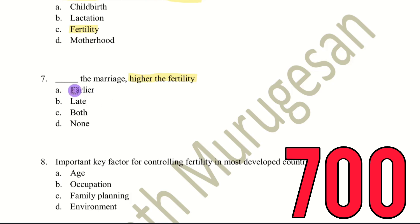The answer is earlier the marriage. If marriage happens at a younger age, the chance of fertility is higher. That is why, the earlier the marriage, the greater the chance of fertility.